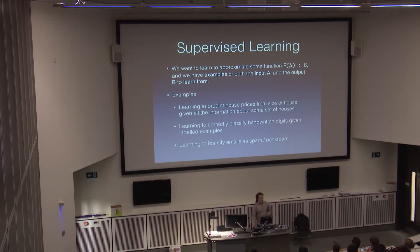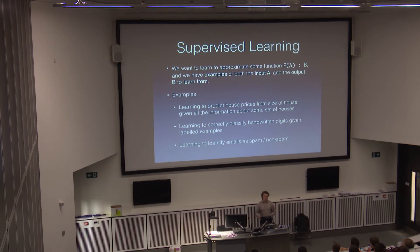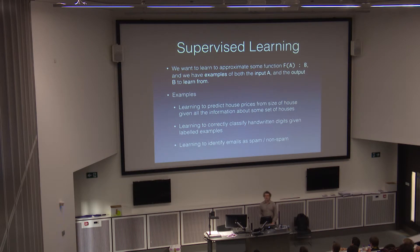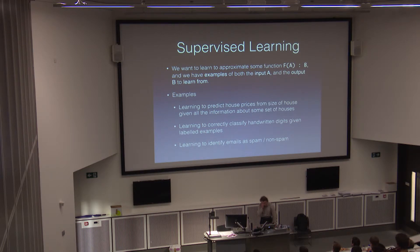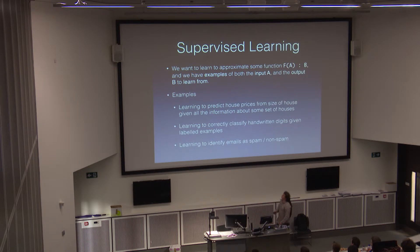We want to find the relationship between the square footage of the house and the price of the house. That way, when we get new examples where we no longer have the prices, we can say: this is my prediction based on all this other data of what the price would be. This generalises to predicting a lot of different things. For example, voice recognition is a form of classification of words, and many different machine learning tasks just boil down to classifying information.